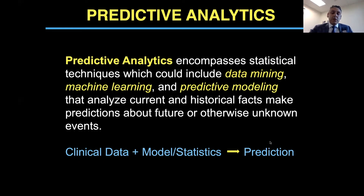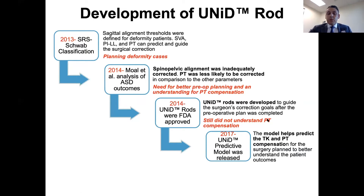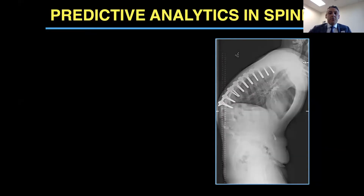So what are predictive analytics? It really is using data — an abundance of data — together with statistical models in order to make a prediction. When we look at the development of the unit rod, it really starts back in 2013. The Schwab classification is so important and integral to our understanding of deformity cases. In 2014, Moell Al described that spinal pelvic alignment was often inadequately corrected, and we have to pay attention to the proximal thoracic correction, which is often missed. In 2014, unit rods were approved, and then in 2017 the model was started to predict thoracic kyphosis and proximal thoracic compensation.